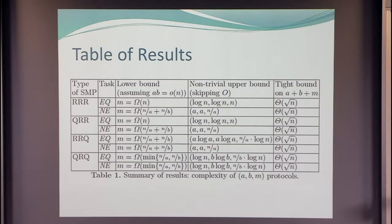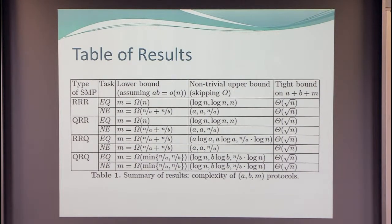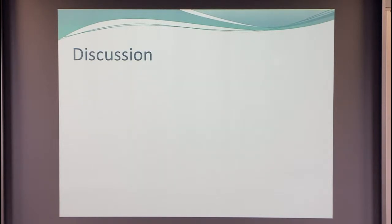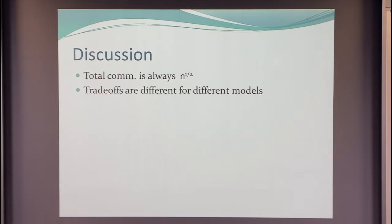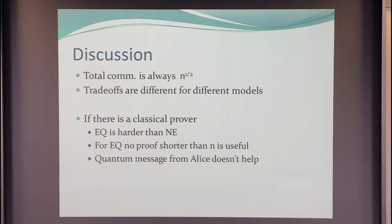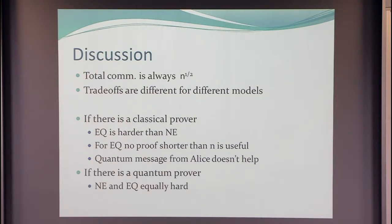That's not too surprising because there should be a certificate for saying the strings are not equal. However, it turns out that if you have a quantum prover, then equality and non-equality have exactly the same lower and upper bounds. Here there are some log factors arising from two different protocols. The most interesting effect: if you have a quantum prover, equality and non-equality are equally hard; with a classical prover, they're different. So the total communication is root n, the trade-offs are different, and for equality with a classical prover, no proof shorter than giving the whole string is useful at all.